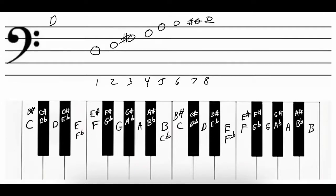The space between the first and the second note, D and E, is a whole step. The interval between the second and the third note, E and F-sharp, is a whole step because we skipped over F natural. The interval between the third and the fourth notes, F-sharp to G, is a half step — they're right next to each other. The interval between the fourth and the fifth notes, G to A, is a whole step.